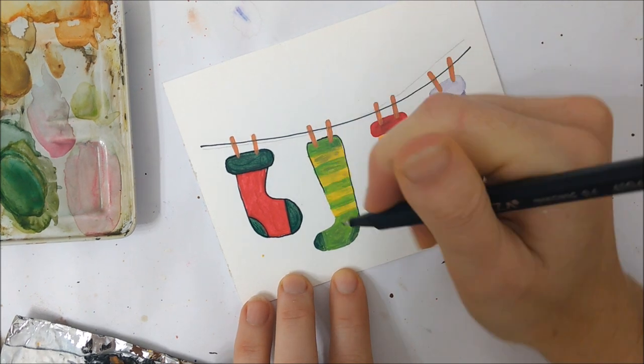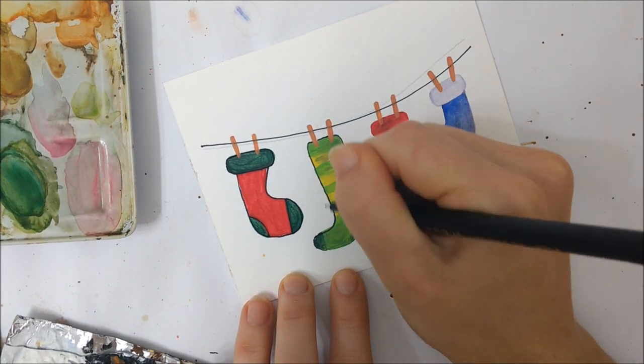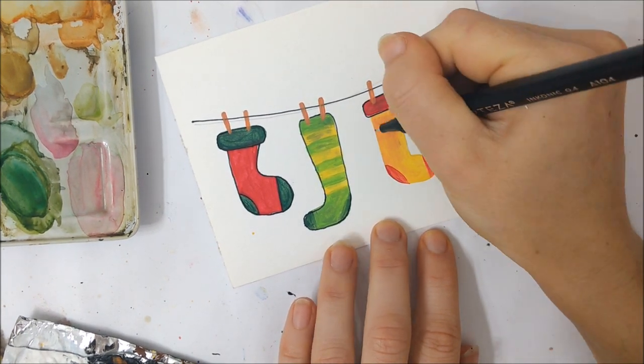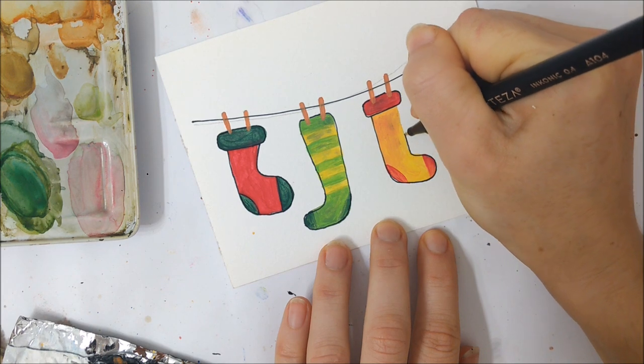But if you're using watercolor, make sure to leave those two notches white so you can paint into those notches and have clothespins that are visible.